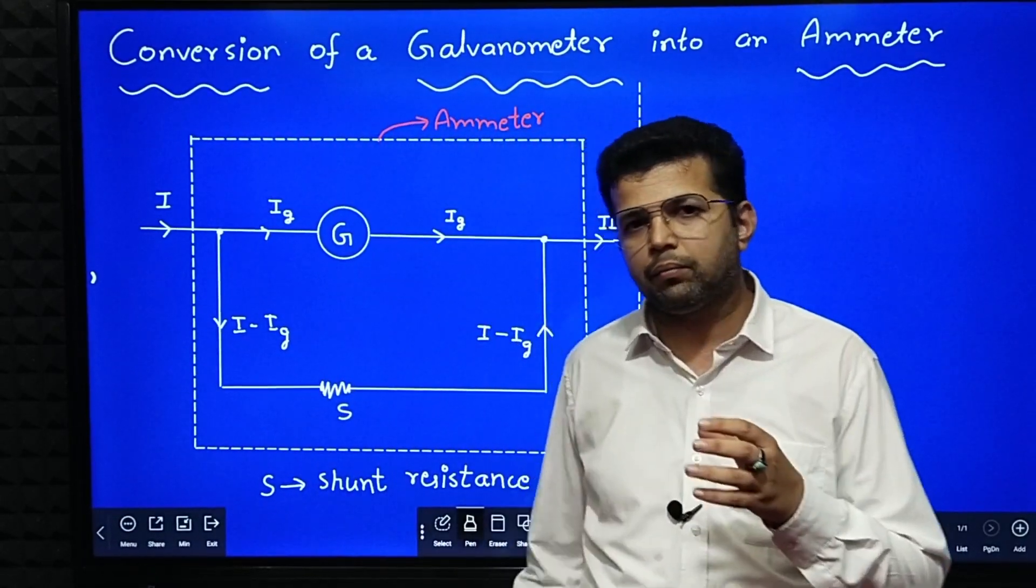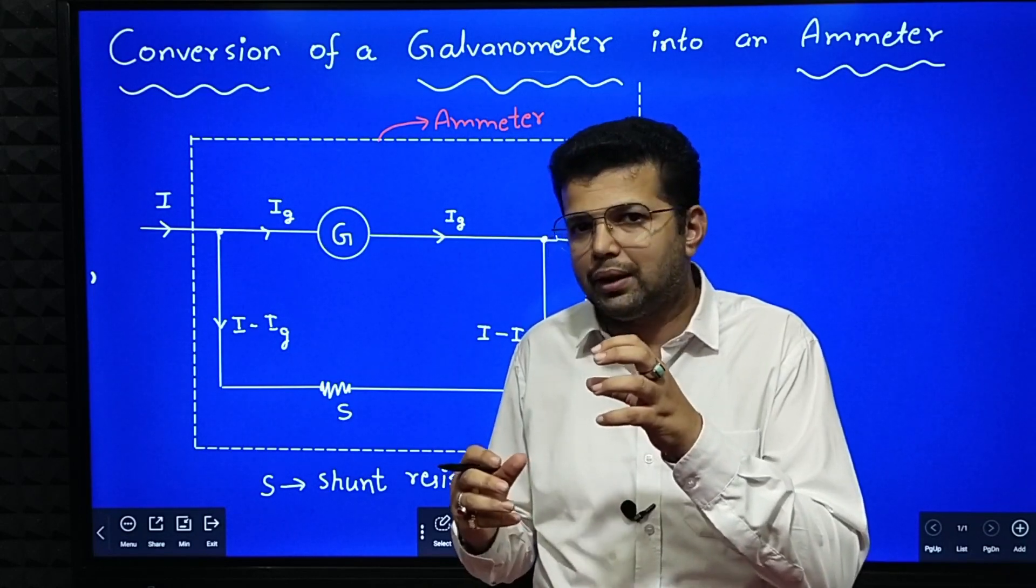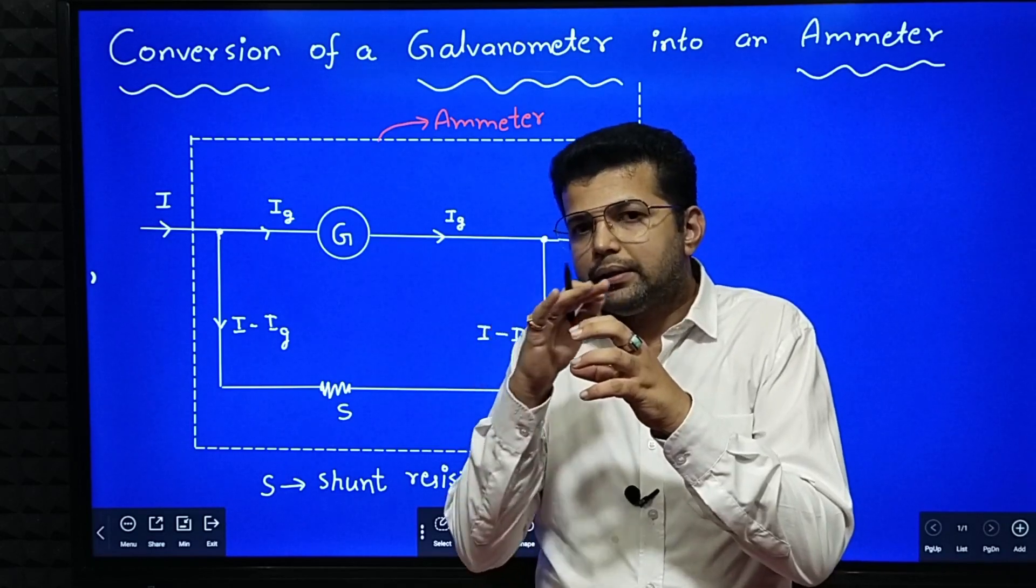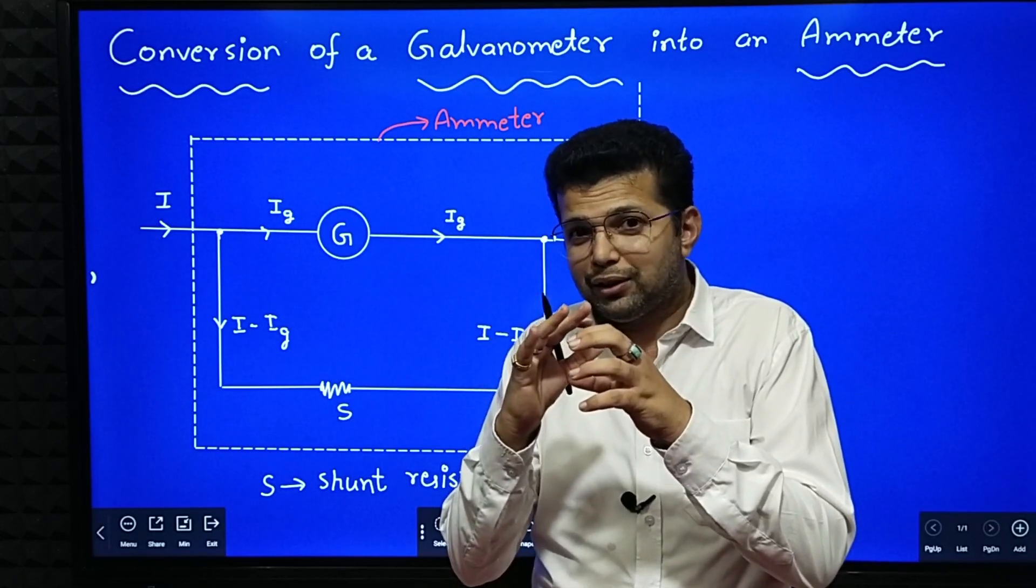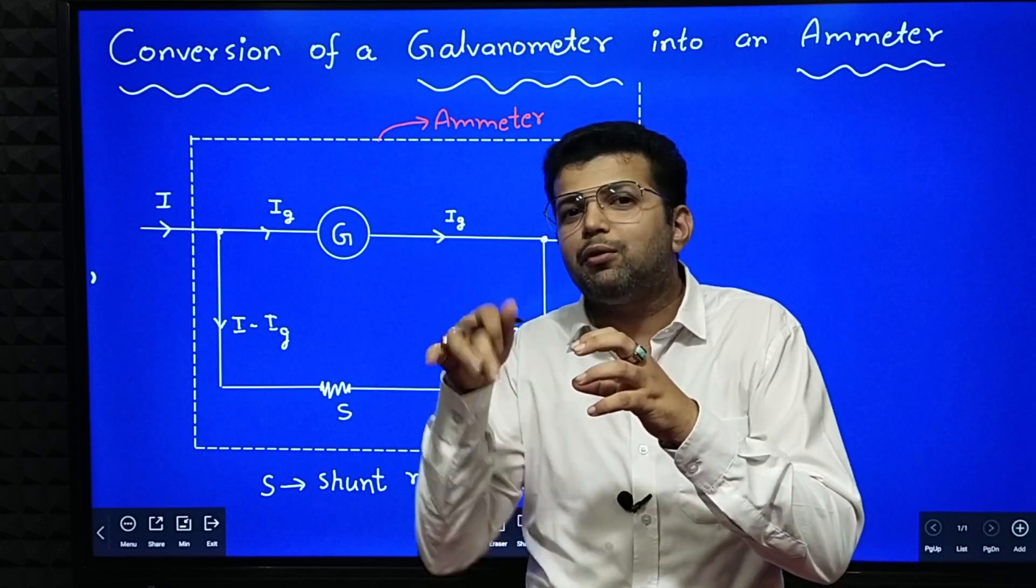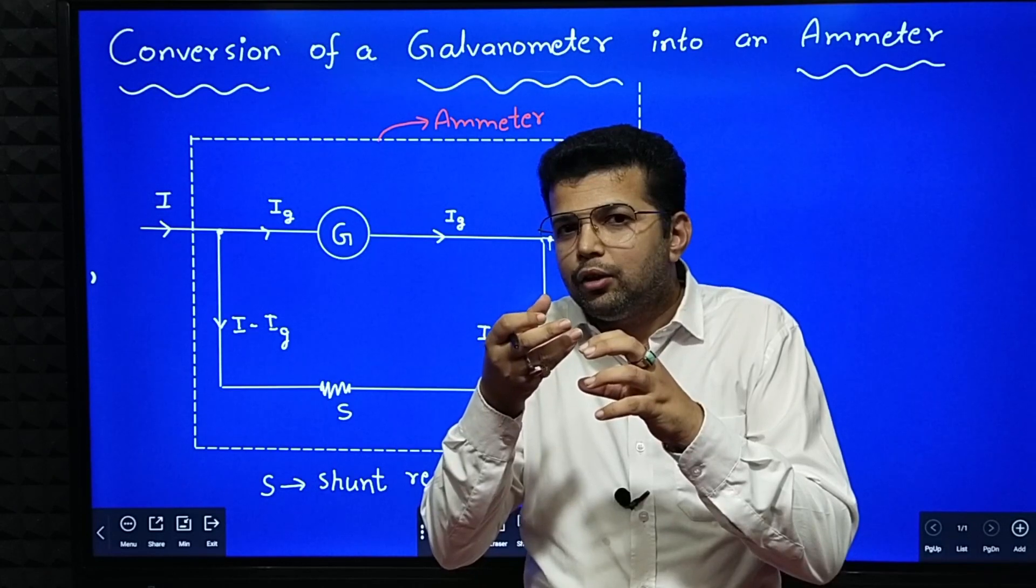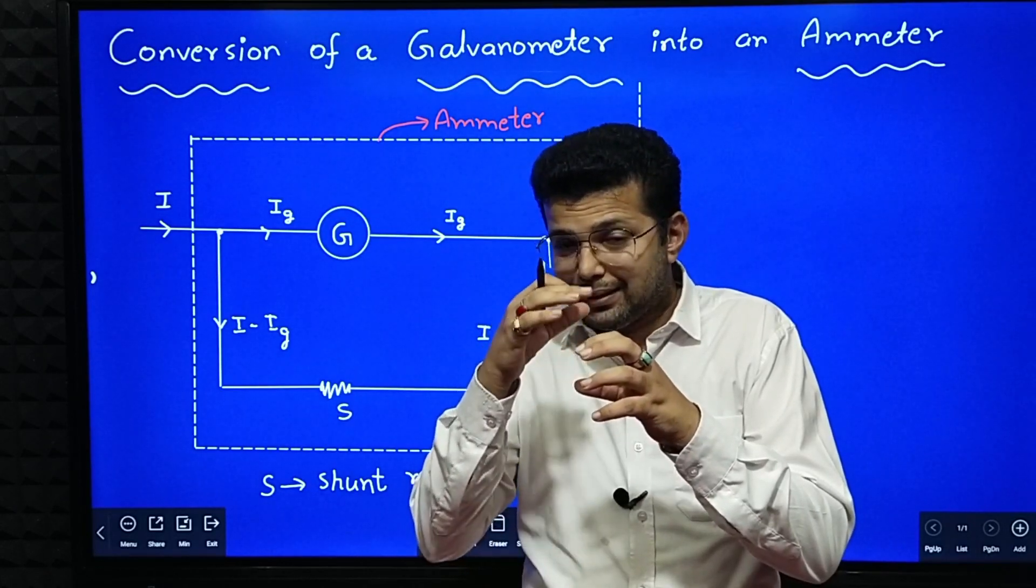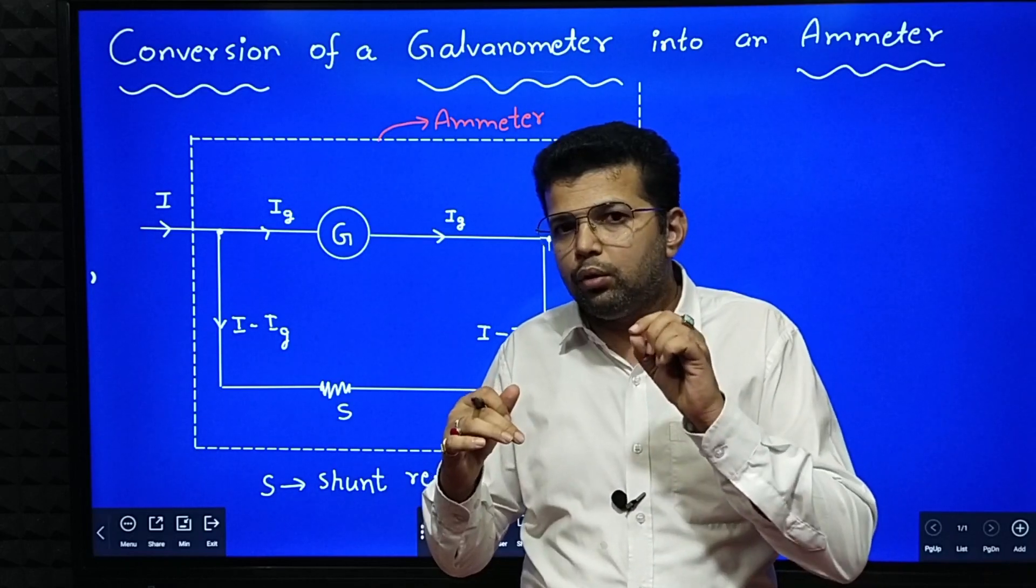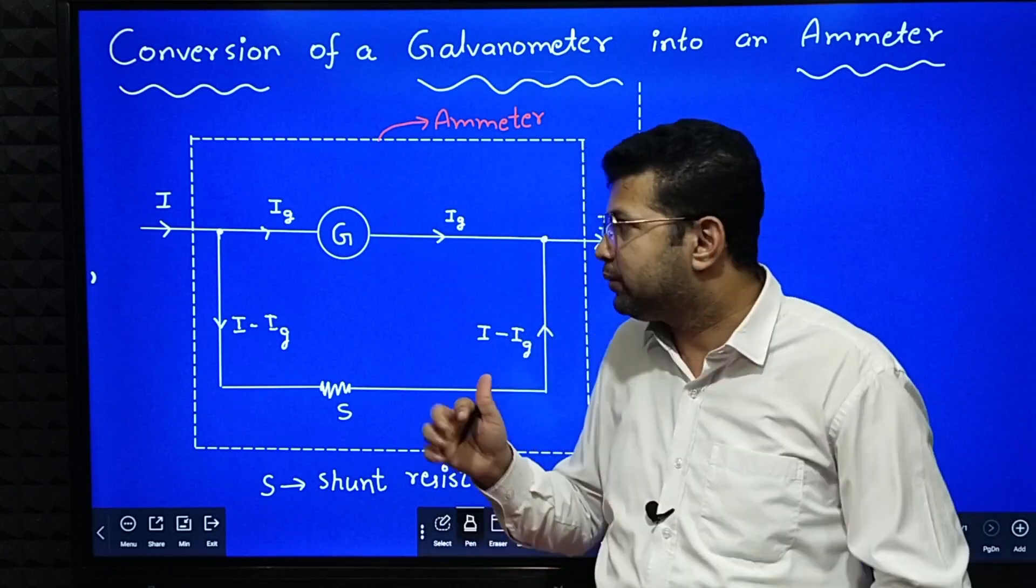First we should understand, an ammeter is a device which is used to measure current. When you introduce an ammeter in the circuit, if the ammeter has high resistance, then it will reduce the current value in the circuit. So we wanted to measure the current, but since the ammeter has some resistance, it will reduce the current. So what to do? The ammeter should have very small resistance.